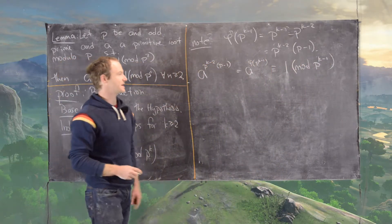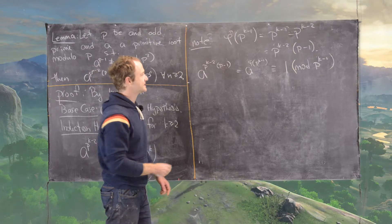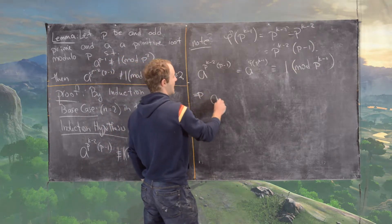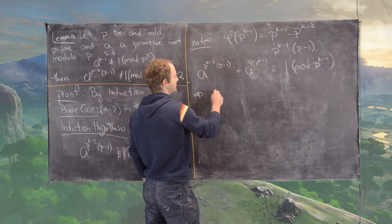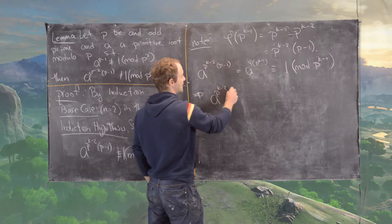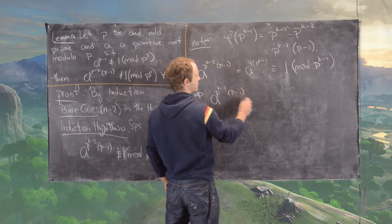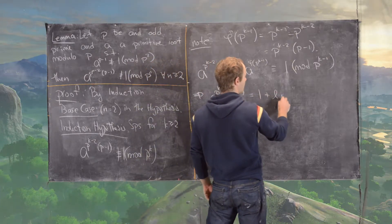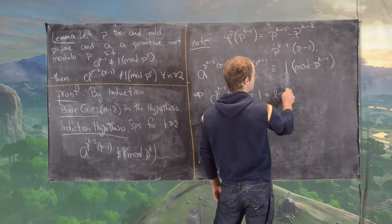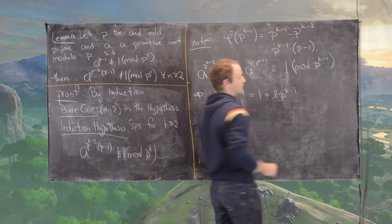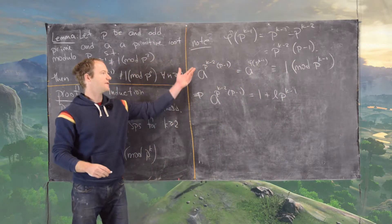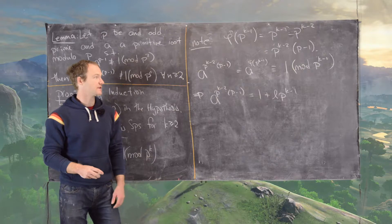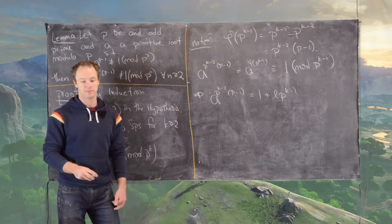What that tells us is that we can write a to the p to the k minus 2 times p minus 1 equals 1 plus l times p to the k minus 1, using the definition of congruence modulo p to the k minus 1.